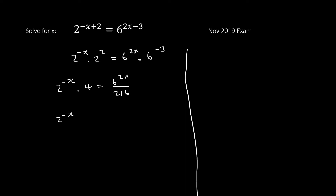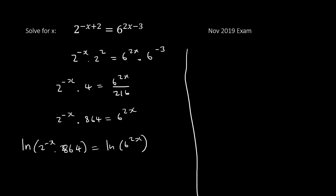I'll multiply both sides by 216 to eliminate the fraction, giving 4 × 216 = 864 on one side and 6^(2x) on the other. So now I have 2^(−x+2) = 864 × 6^(2x). Since we have exponents on both sides, I'll apply ln to both sides.